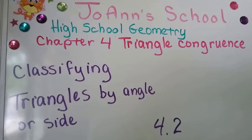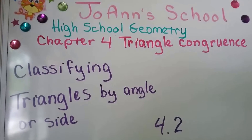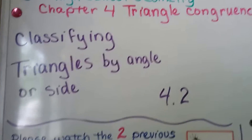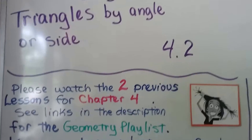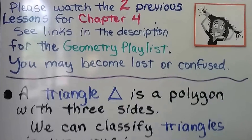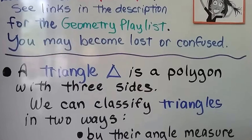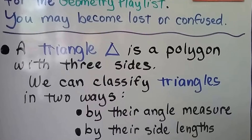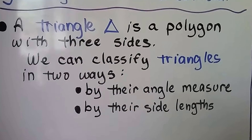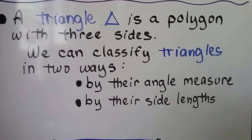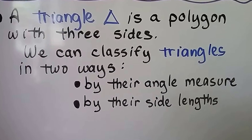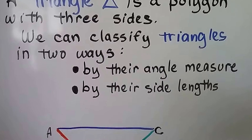Classifying triangles by angle or side is Lesson 4.2. A triangle is a polygon with three sides, and we can classify triangles in two ways: by their angle measure and by their side lengths.